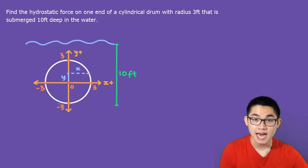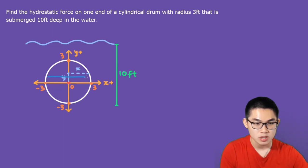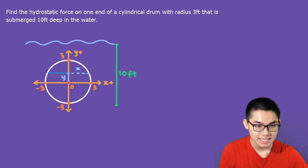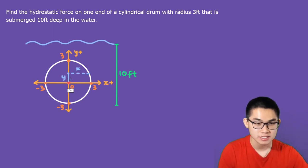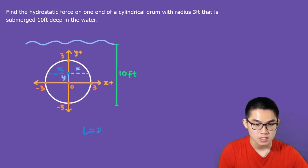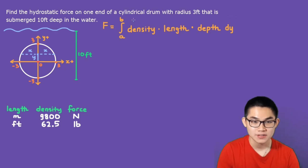The idea behind finding the hydrostatic force is that you find the force of each horizontal stripe acting on the circle — this one, then this one — and you keep doing it until you reach the very top of the circle, then add all of those forces together. If we're currently at a given stripe, the vertical distance from the center to the stripe is y, and the horizontal distance from the y-axis to the edge is x. Since the y-axis divides the circle in halves, the total length of the stripe is 2x.